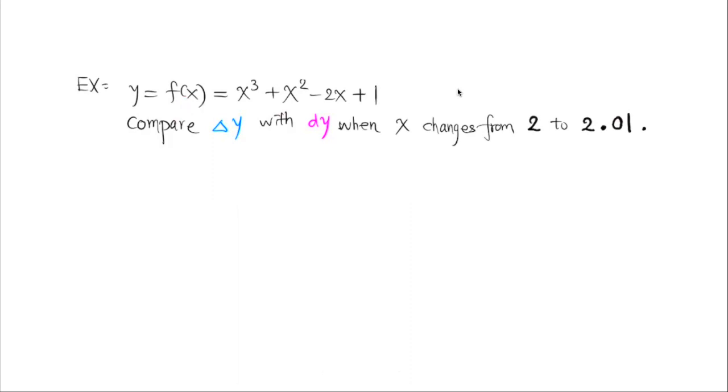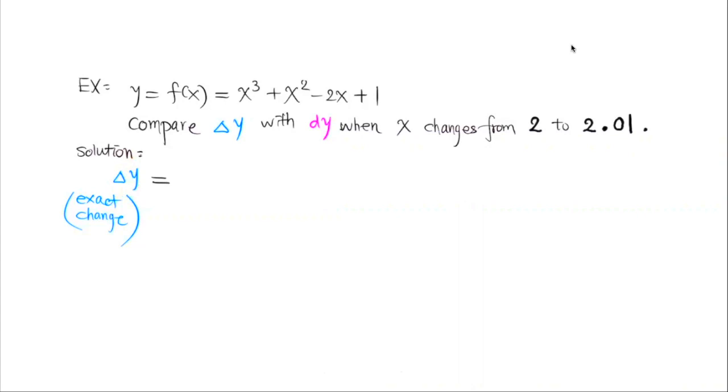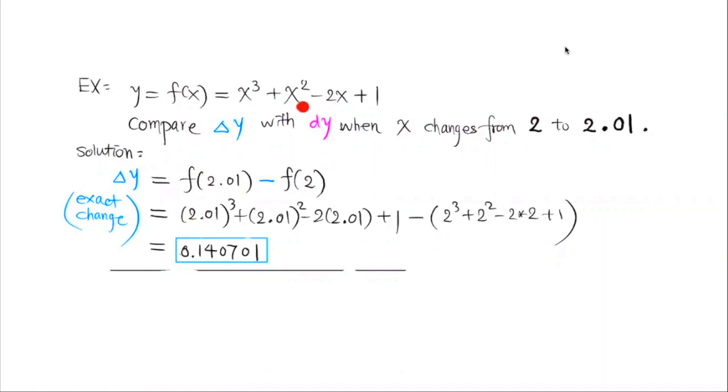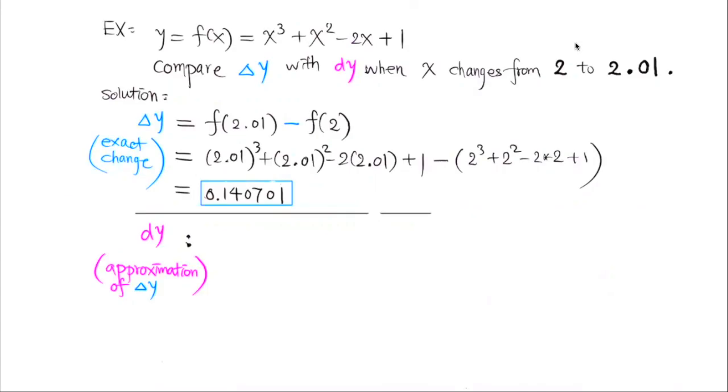For example, if y is equal to f of x and equal to x cubed plus x squared minus 2x plus 1, let's compare delta y with dy when x changes from 2 to 2.01. Let's first find delta y. Remember that delta y is the exact change of y along the curve of the function. So delta y is equal to f of 2.01 minus f of 2. Substituting 2.01 into x into this function and substituting 2 into x into this function. And now we took the difference of these two function values and it turned out to be 0.140701.